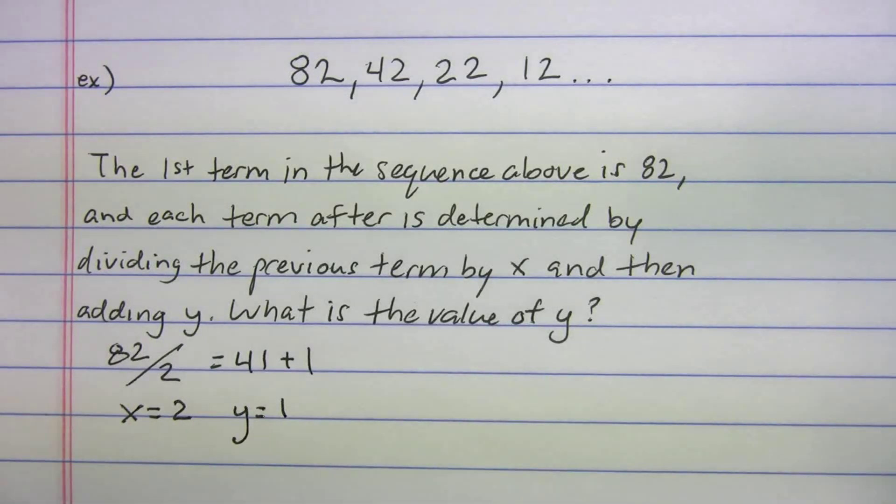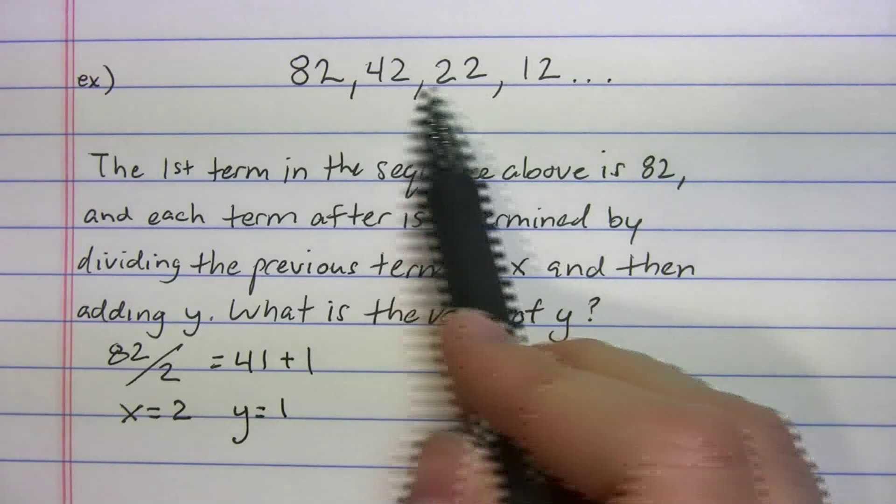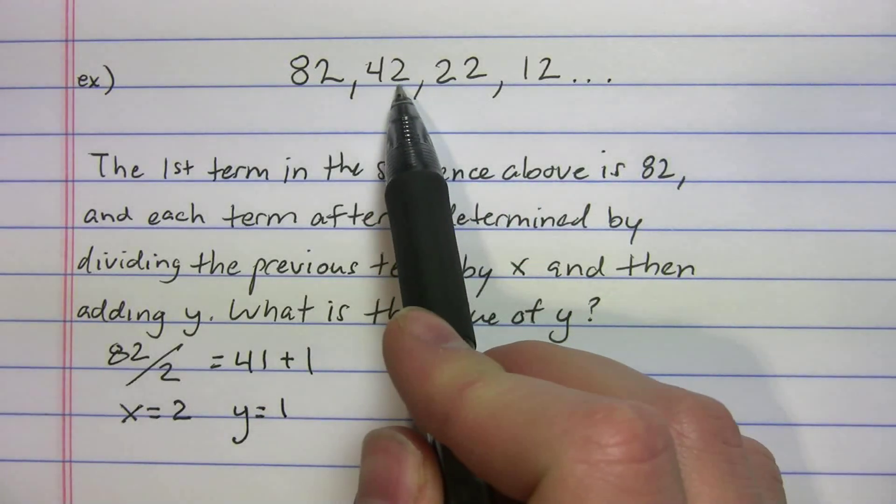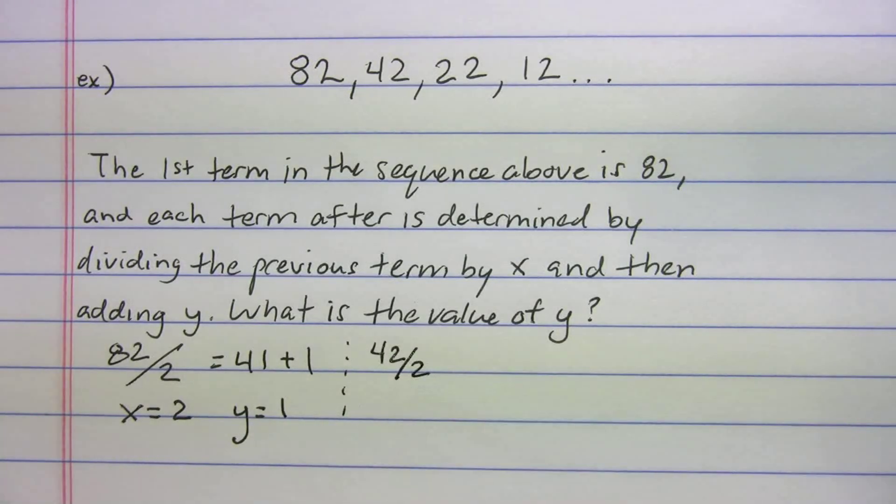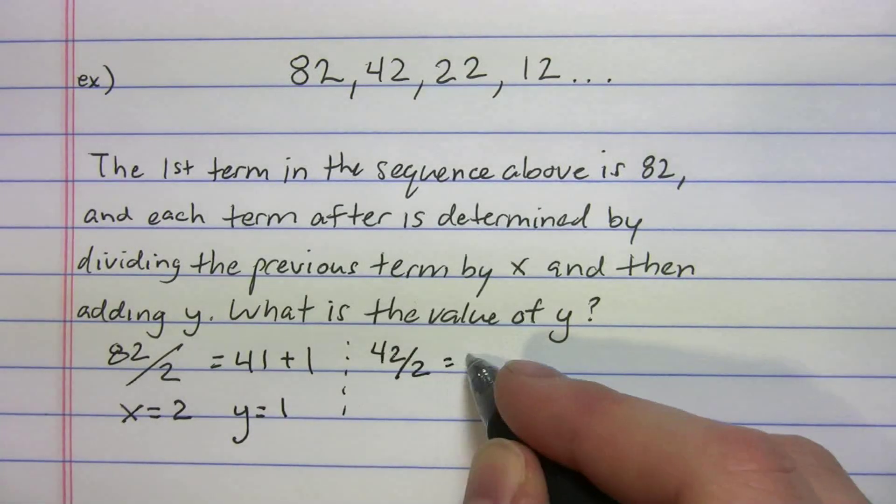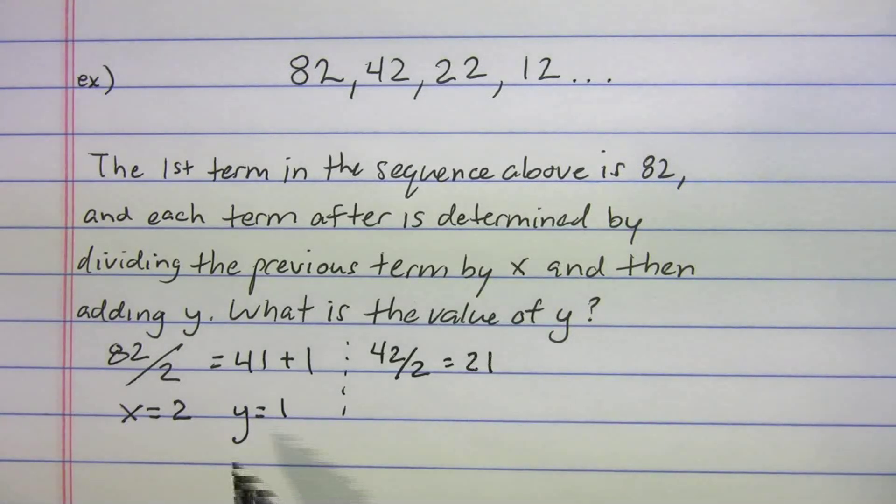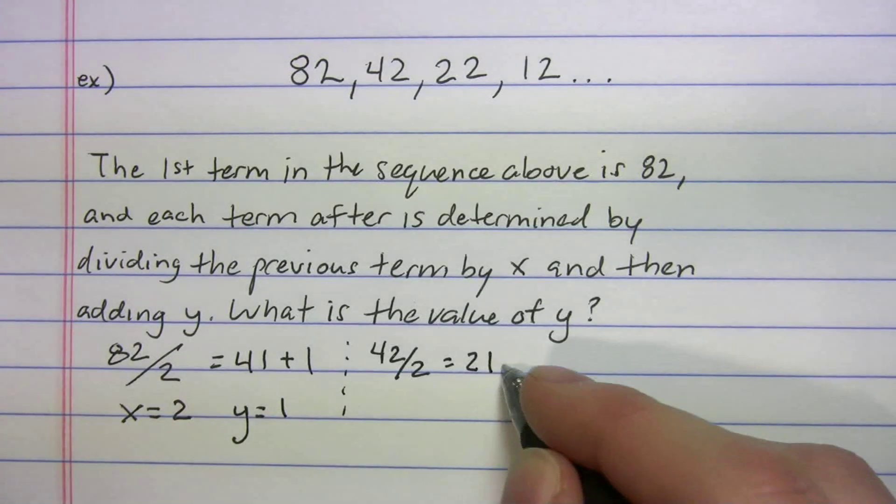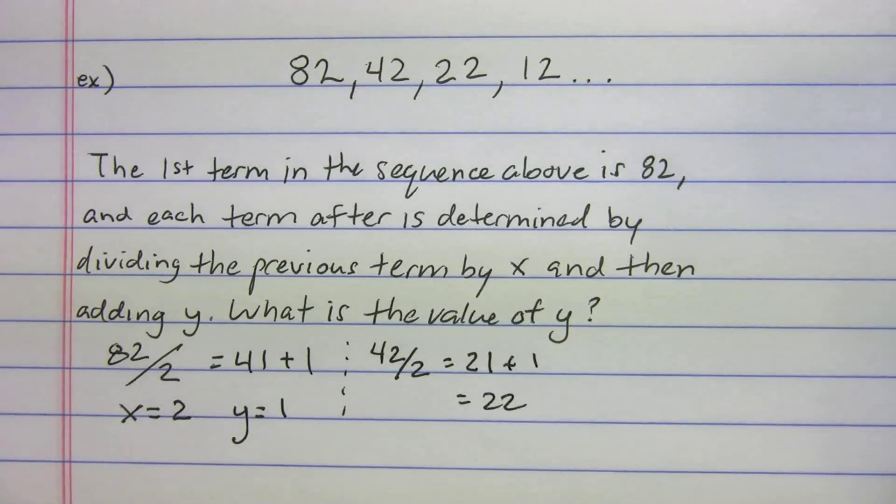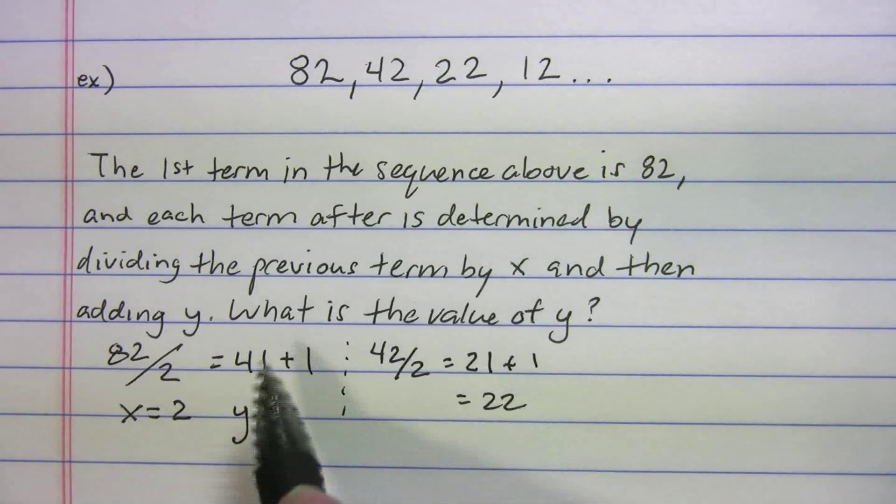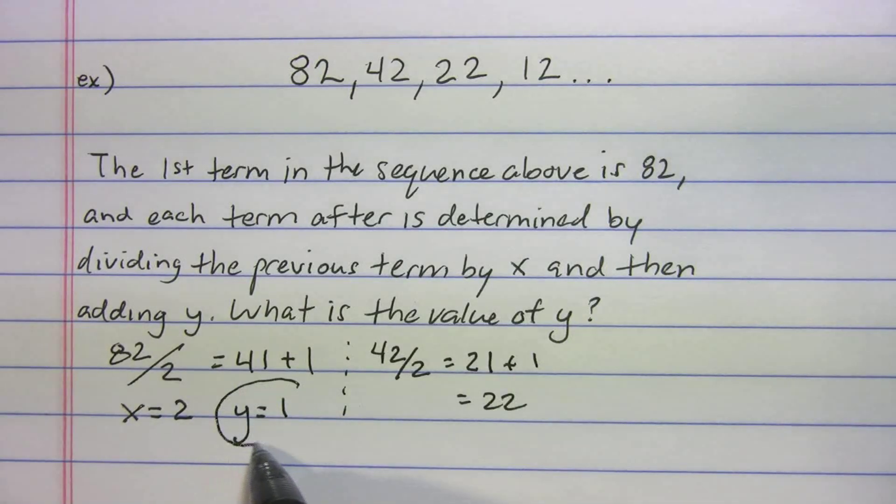Now we got to test it out though. We got to make sure that works for the next one. So 42 divided by 2 gives us 21, and what do we do? We add 1, so we do get 22. So this pattern seems to work. What is the value of Y? The value of Y is 1.